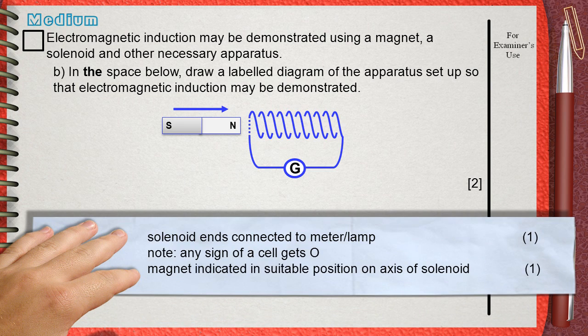The two marks are given for solenoid ends connected to meter or lamp. Any sign of a cell gets zero. In electromagnetic induction, you will produce an electric current. So, you can never draw a cell or anything that will produce current. This will not be electromagnetic induction.